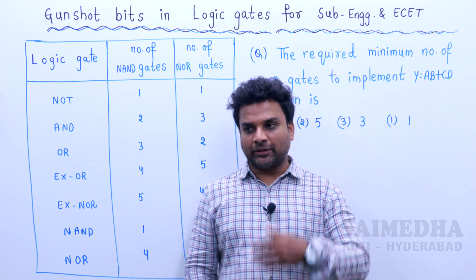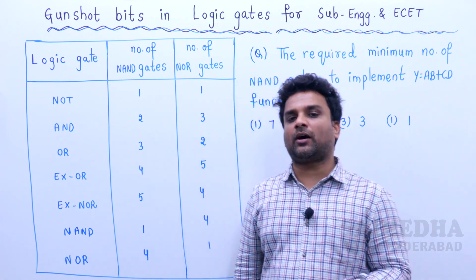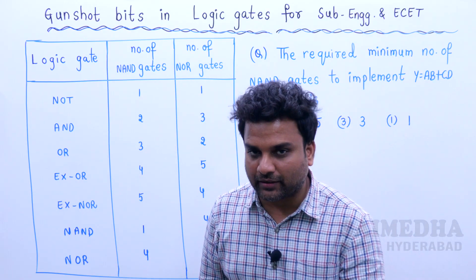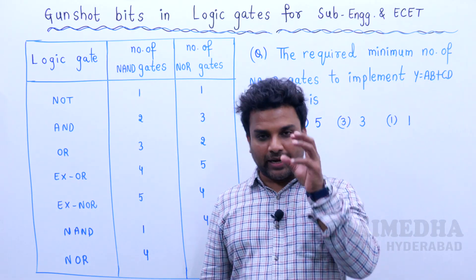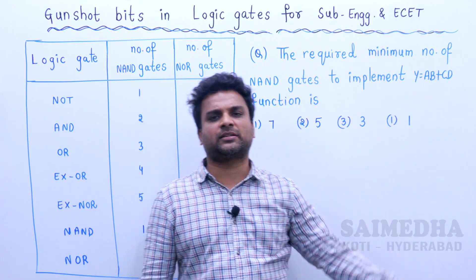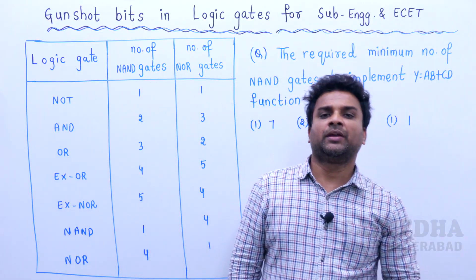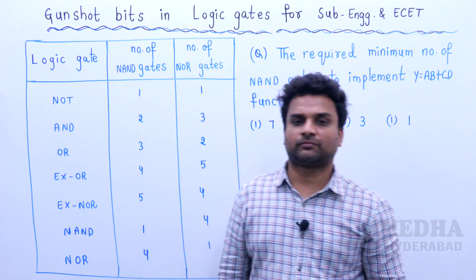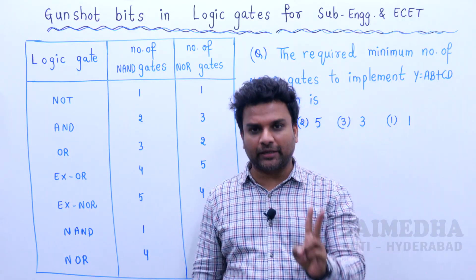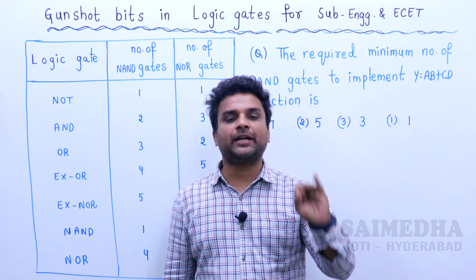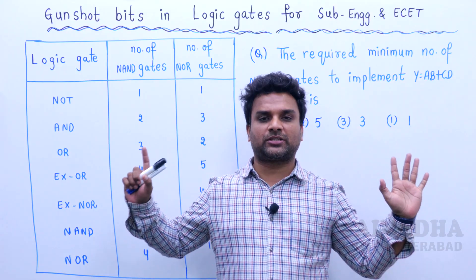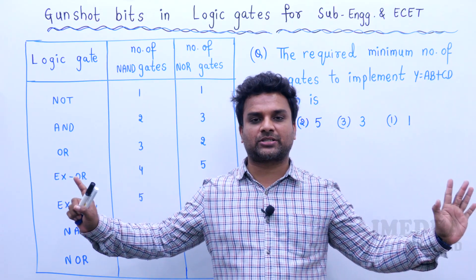What I am saying is, why NAND gate and NOR gate are universal gates — because that gate is used to design any basic gate. You can implement it. That is why NAND gate and NOR gate are universal logic gates.